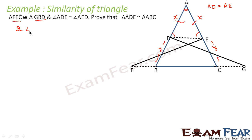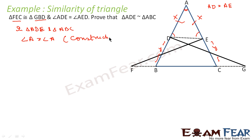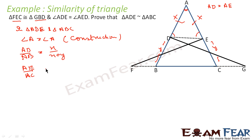So we say that in triangle ADE and triangle ABC, angle A is equal to angle A — both are the same by construction. Second, AD by AB equals X by (X plus Y). Also, AE by AC equals X by (X plus Y). So AD by AB is equal to AE by AC.